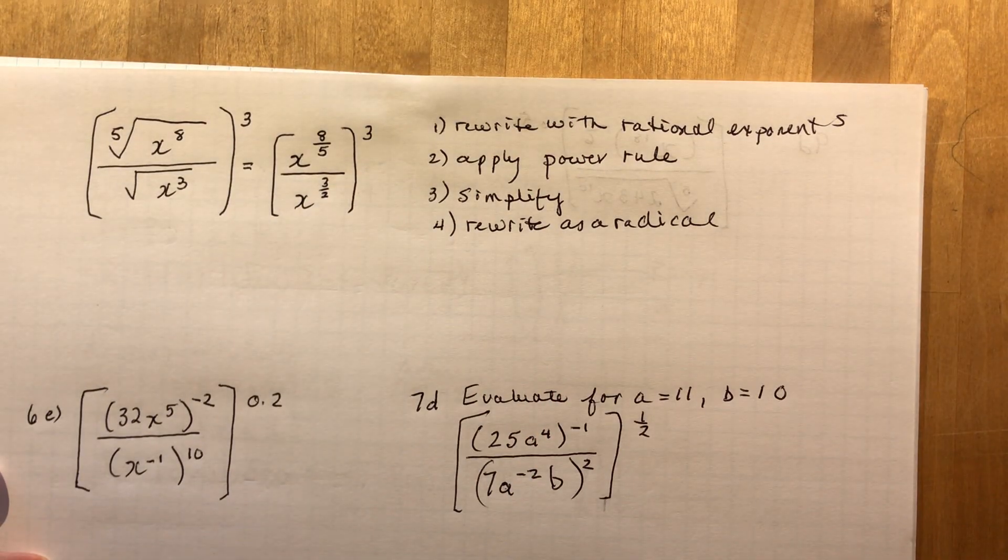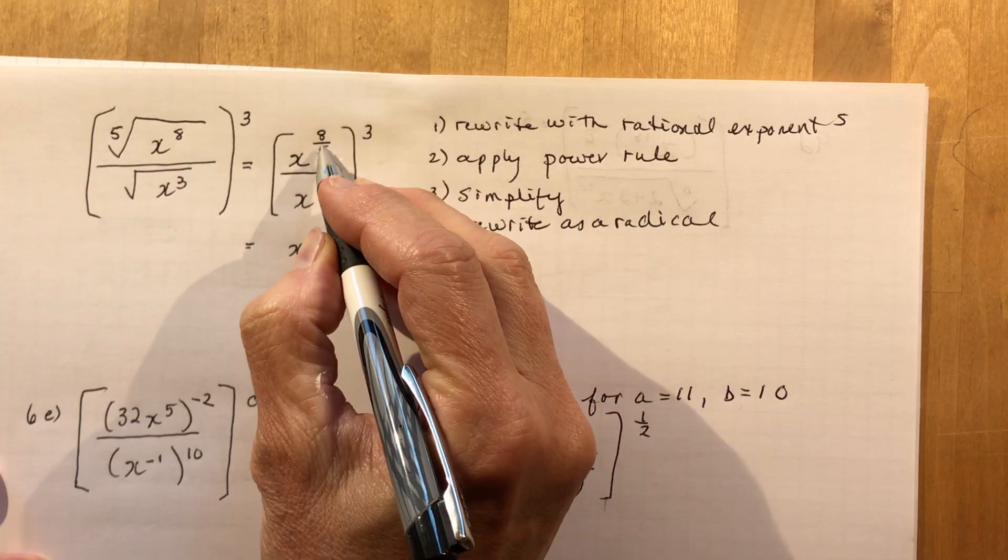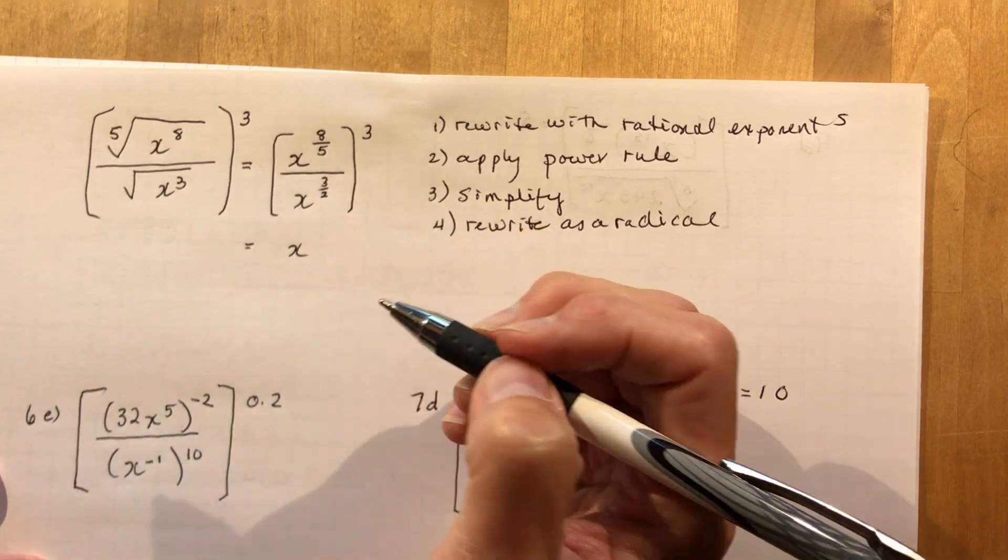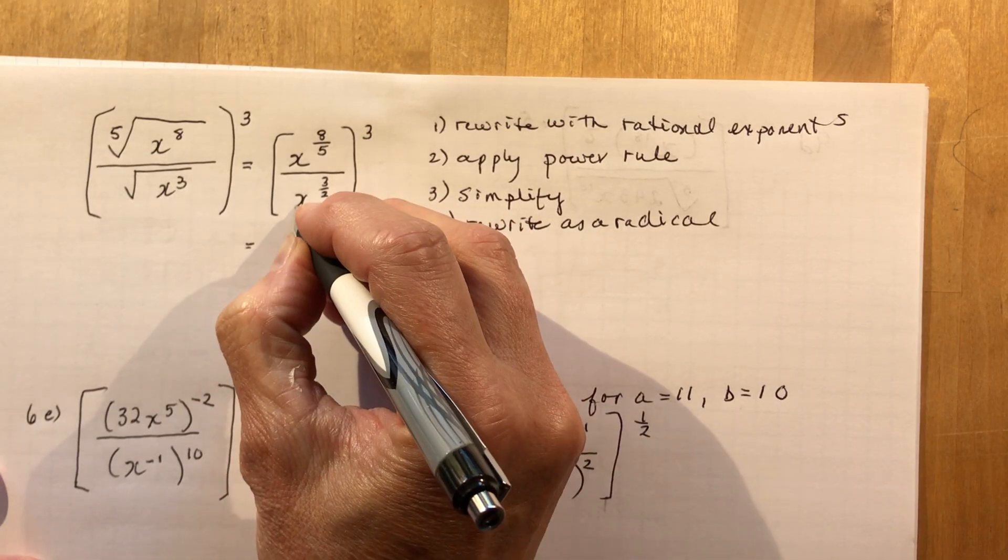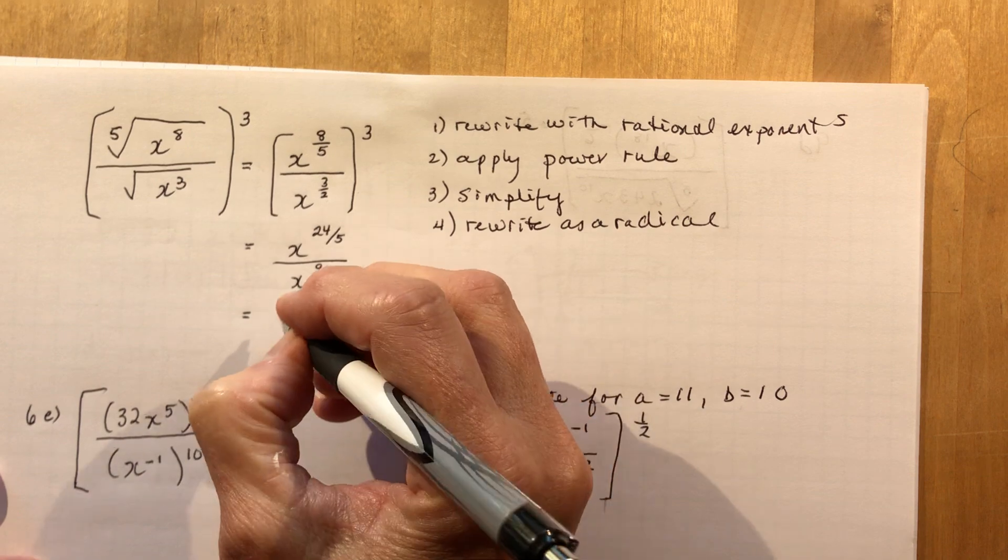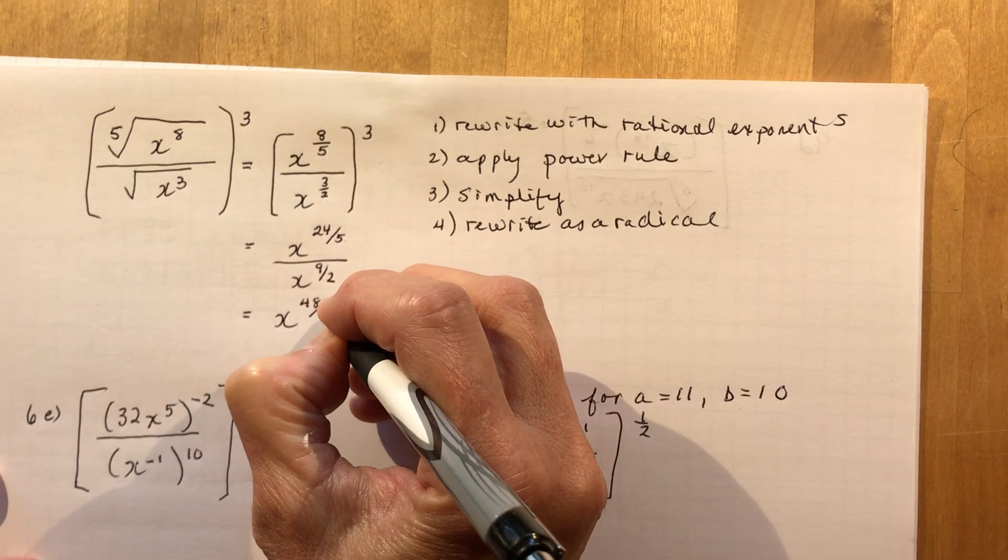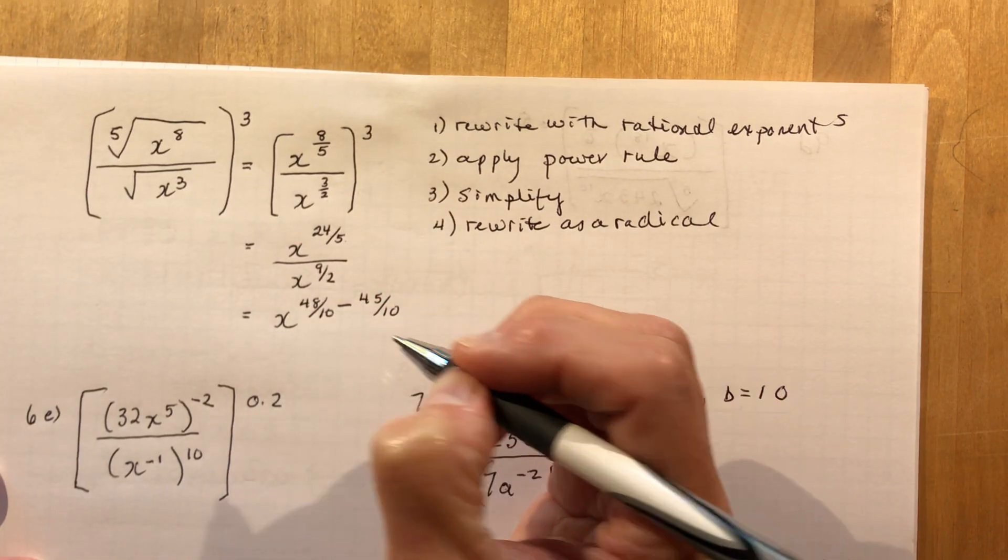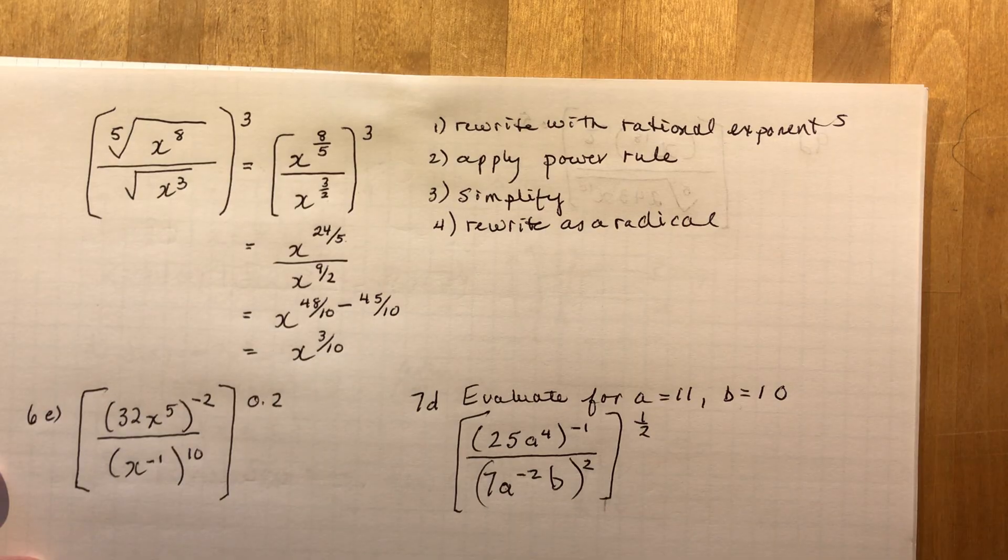So if I want to simplify this now, I need to work with the exponents here. So this is x to the 3 times 8/5. Now you could simplify this first if you want. You could find a common denominator and subtract them. It doesn't really matter which order you do that in. So I'm going to do it this way first. I'm going to say, well that's 24 over 5 in the numerator. x to the 3/2 cubed would be x to the 9/2. And then I would have to find a common denominator. So I have x to the 24 over 5 is the same as 48 over 10, and I would subtract this one which would be 45 over 10, multiplying numerator and denominator by 5. So that gives me x to the power of 3 over 10, and that's my answer.